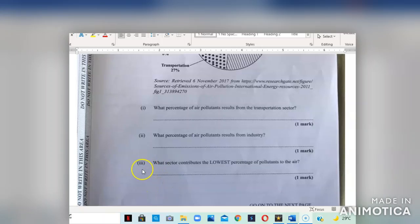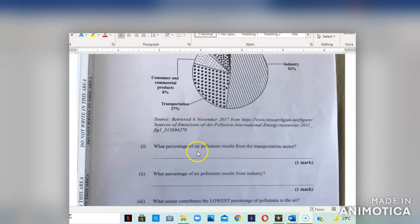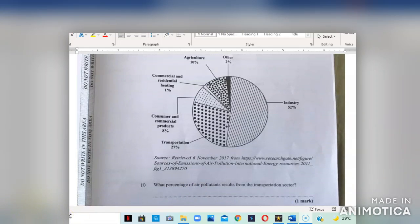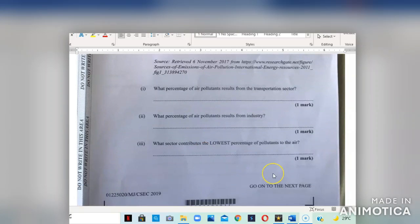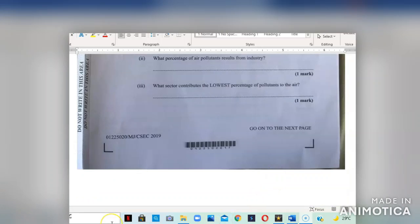Question 3, part 3. What sector contributes the lowest percentage of pollutant to the air? Now you're going to look for what sector contributes the lowest. The lowest is 1% and that is commercial and residential heating. For commercial and residential heating, they contribute the lowest.